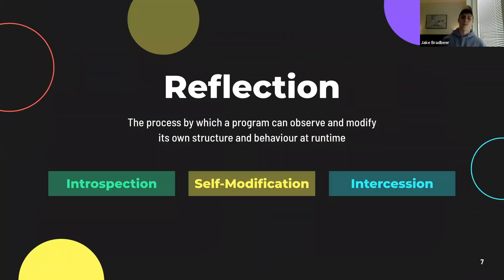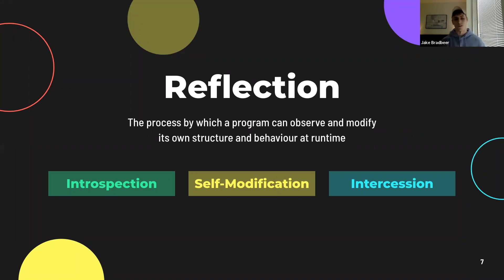The second main branch of metaprogramming is reflection. As a reminder, reflection is the process by which a program can observe and modify its own structure and behavior at runtime. This can be broken down into three main sub-branches: introspection, self-modification, and intercession. As I go through each one, think about how you may already be implementing some of these techniques without knowing it's metaprogramming, or other ways you can achieve the same goals with existing knowledge. Metaprogramming adds new functionality but also provides more efficient ways of doing things we can already do.